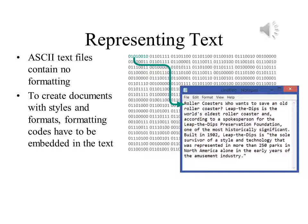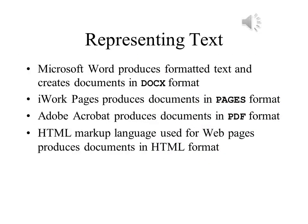A text file, almost by definition, has no formatting. There is nothing in the file that tells the program how to display it. Most programs have their own file formats for the data that they use. Word processors need to include formatting information such as the name and size of the font. WordPerfect uses the DOCX format, iWork Pages uses the Pages format, Adobe Acrobat uses the PDF format, and web pages have formatting information stored in tags.